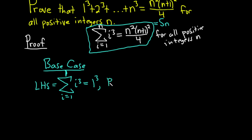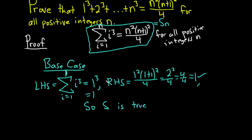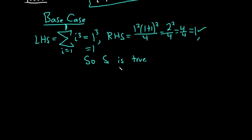The right-hand side: RHS is 1 squared times 1 plus 1 squared over 4. So that's 1 squared, which is 1, times 2 squared over 4 — that's 4 over 4, which is 1. The left-hand side is 1, the right-hand side is 1, therefore they're equal. So the statement is true when n equals 1 — S sub 1 is true. Usually it's pretty easy to show the base case, I'd say 99% of the time.